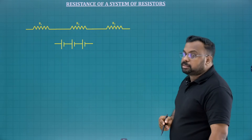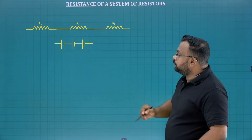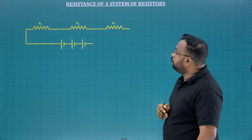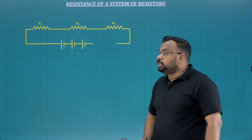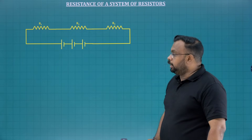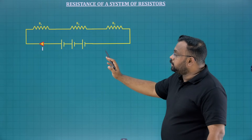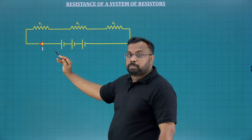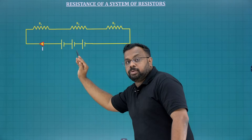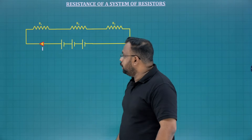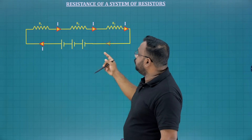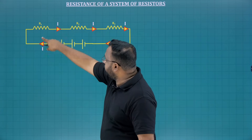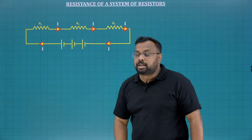Then we are going to connect this entire combination across a battery. We are going to complete the circuit. The circuit is completed. Now when the circuit is completed and on, surely the current will be flowing. Let us assume the current I is starting from the positive terminal of the battery, flowing from positive to negative. The same current only will be flowing through all the resistors because there is no other way — current is the same everywhere: I, I, I through all resistors.